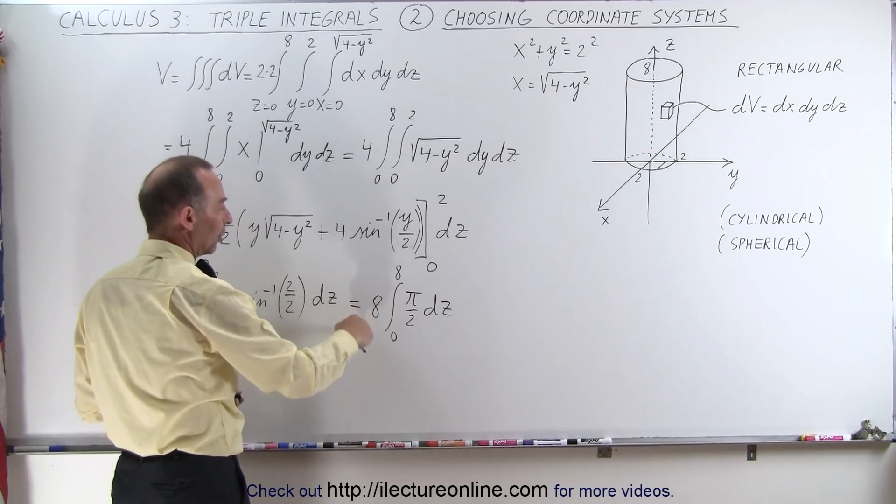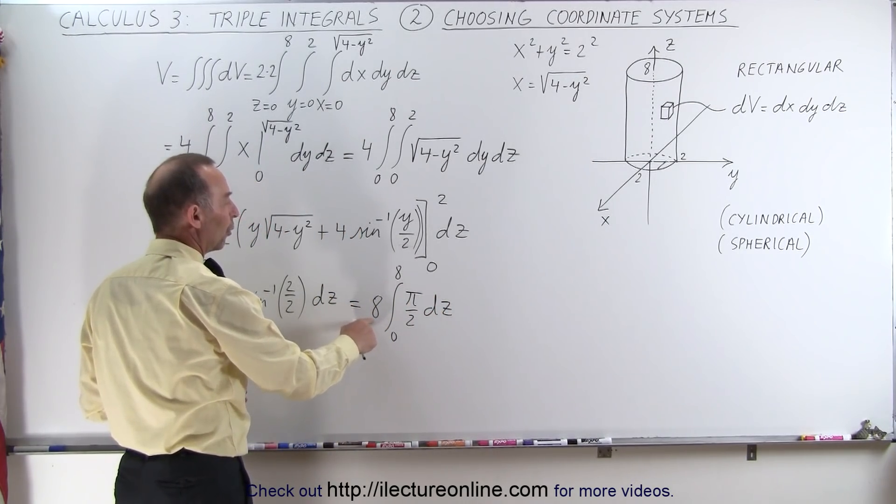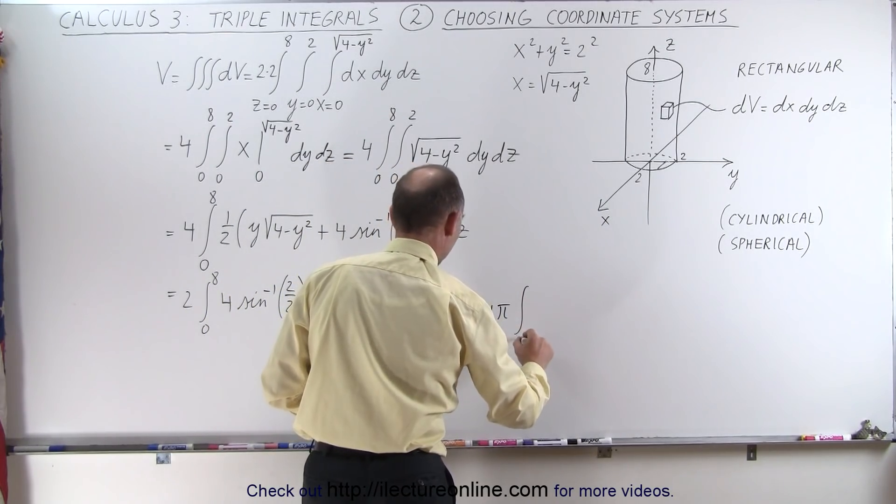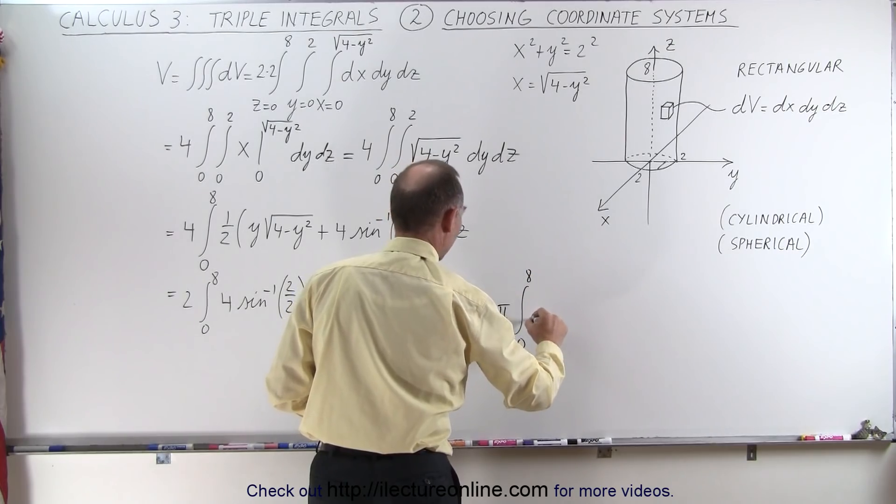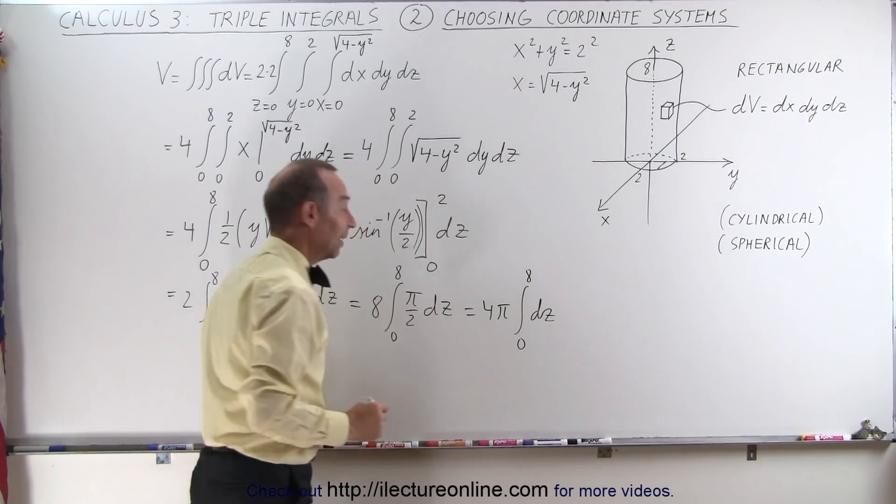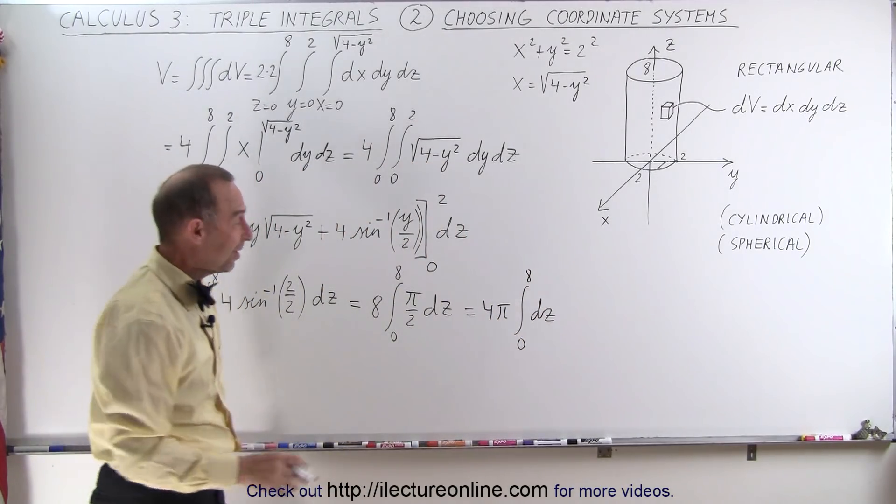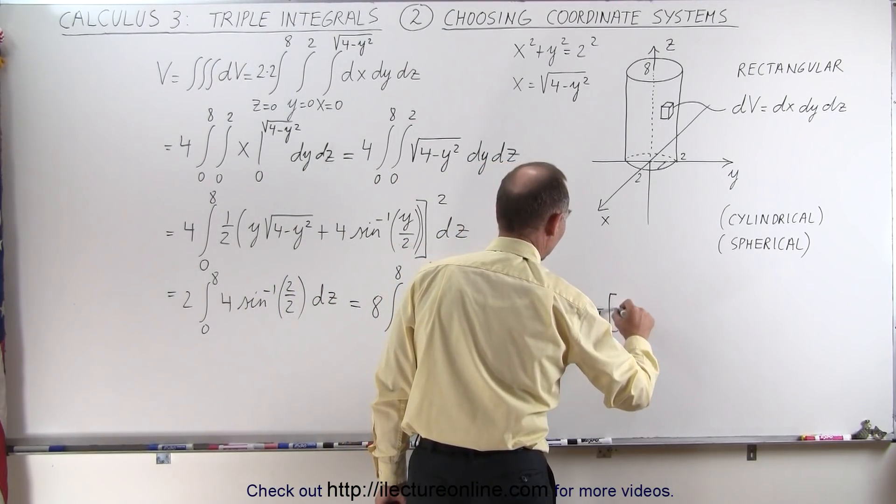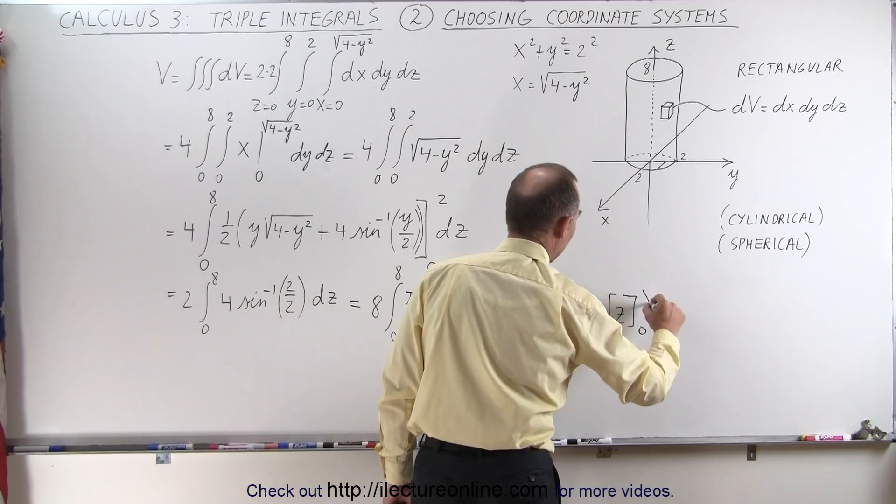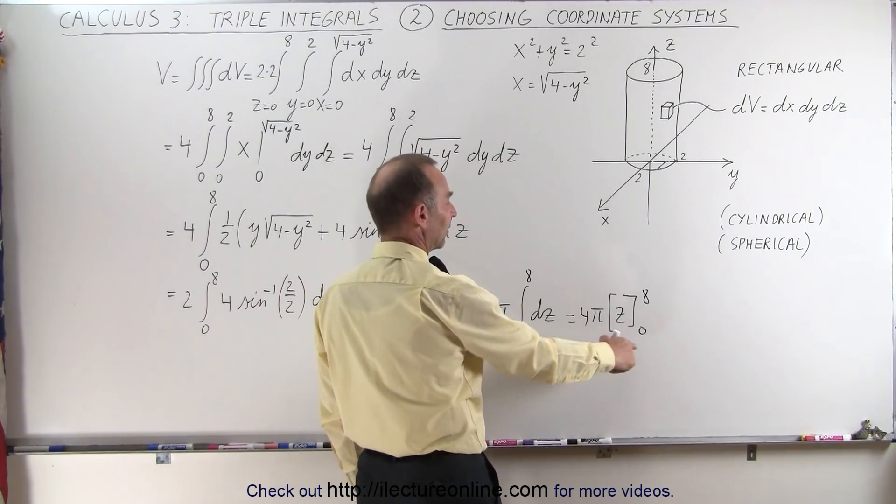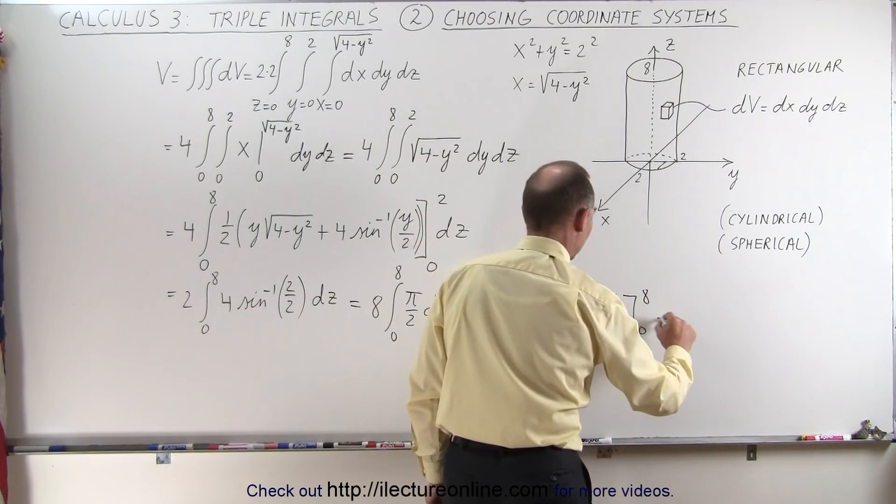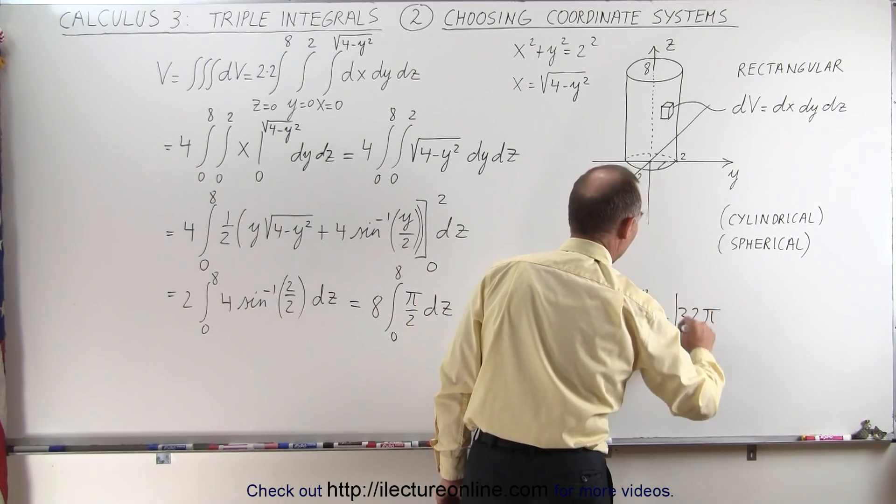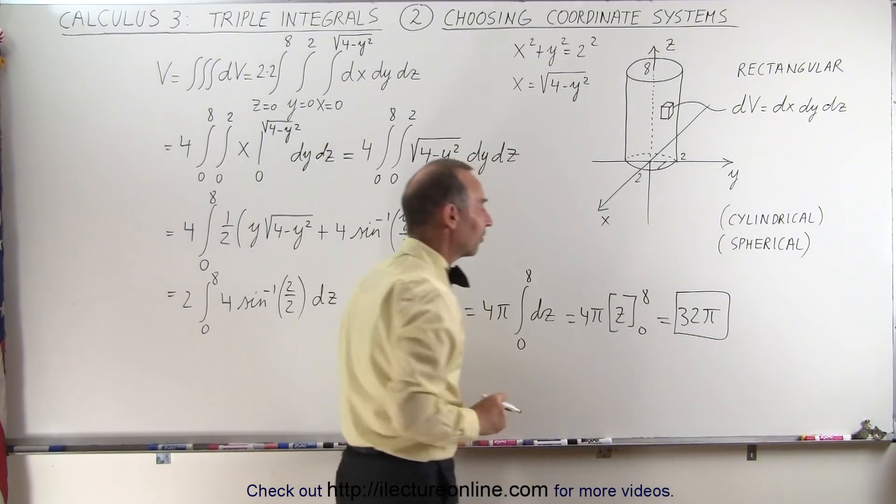And now, the last integral is easy. We simply integrate that. We get 4π times z, evaluated from 0 to 8. Plug in the upper limit, we get 8. The lower limit gets nothing. So this is equal to 8 times 4, or 32π as being the volume of that cylinder.